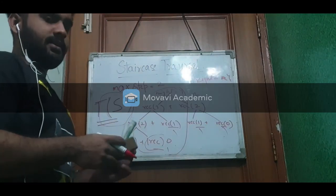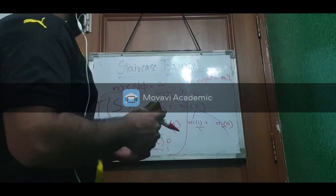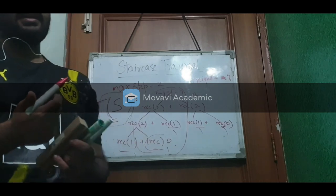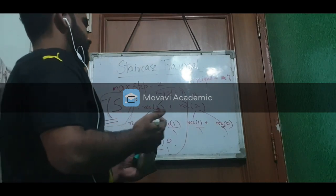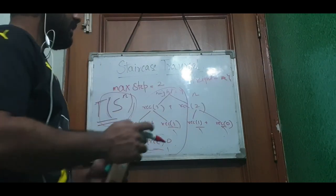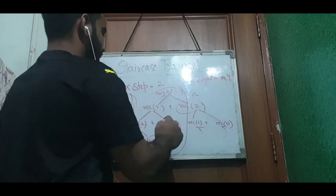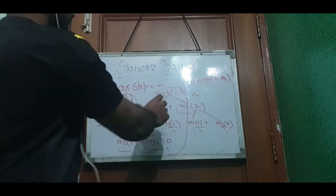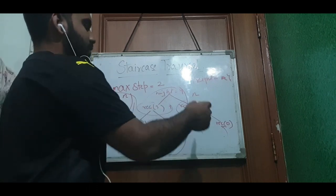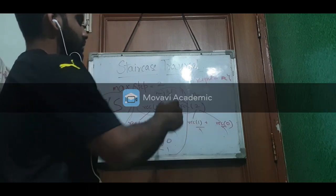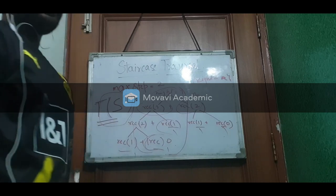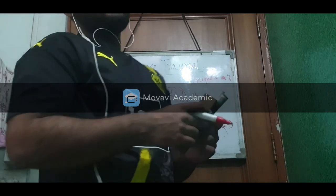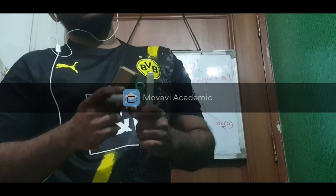The next option is to store these computed values to avoid recomputation. The second approach is memoization — we store the values of subproblems so we don't have to recompute them. This is a better option compared to the pure recursive solution.